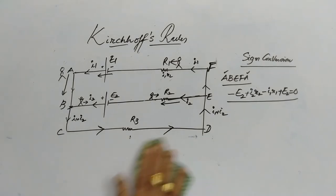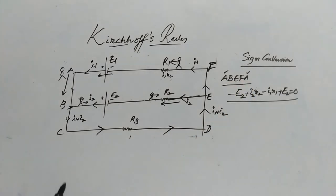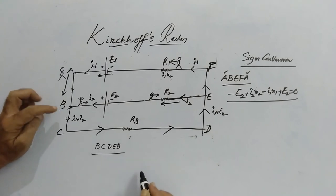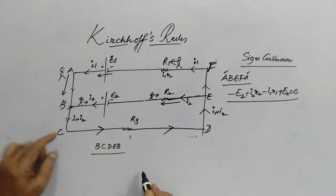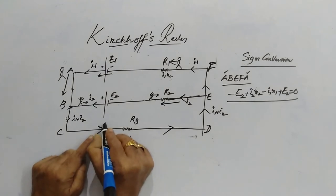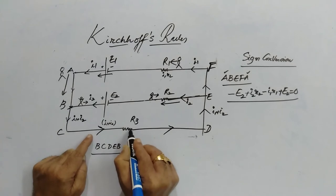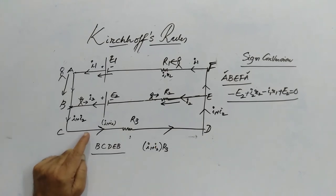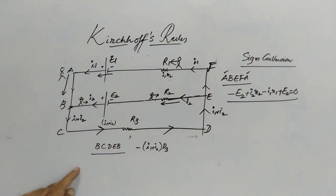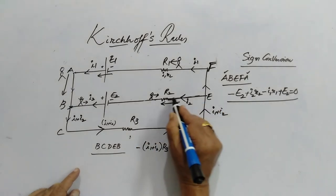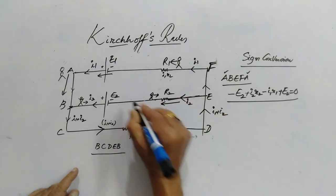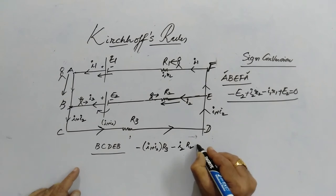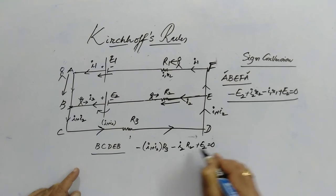Apart from loop A-B-E-F-A, I can also take loop B-C-D-E-B. Starting from B, going this way — no elements found. Here the total current is i1 plus i2 and it is passing through R3, therefore the potential drop is (i1 + i2)*R3. The current is in your direction, therefore it is negative. Then i2*R2 — again it is in your direction, so again negative i2*R2. Here you are moving in the increasing direction of potential for E2, therefore plus E2, which equals zero.